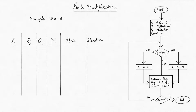We'll cover one example using this algorithm. Let's try multiplying two signed integers, 13 and -6. First, convert them to their binary forms with a maximum of 5 bits.